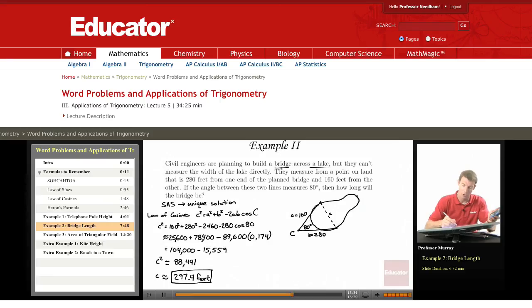So I drew my bridge across the lake here. That's the bridge right there. And then it says we measure from a point that is 280 feet from one end of the bridge, and 160 feet from the other. So I drew that point, and I filled in the 160 and the 280. And then it gave me the angle between those two lines, so I filled that in.